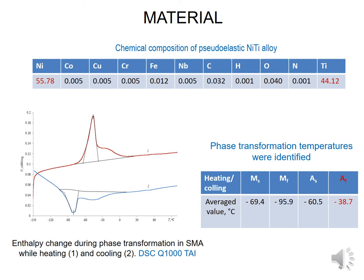Pseudoelastic shape memory material was used in this study. The chemical composition of the NiTi alloy is 55.78% nickel, 44.12% titanium, and remaining other components. The phase transformation temperatures were identified using differential scanning calorimetry. The test shows forward and reverse phase transformations occurring in the shape memory alloy during heating and cooling cycles. The austenite finish temperature is minus 38.7°C.